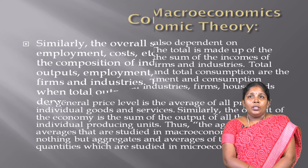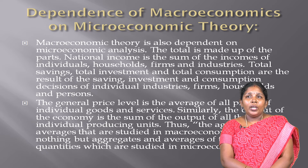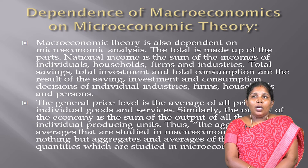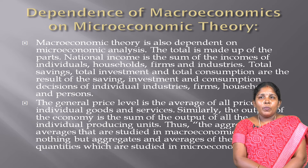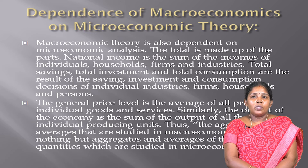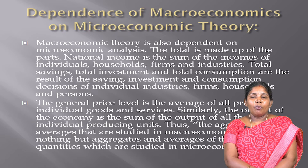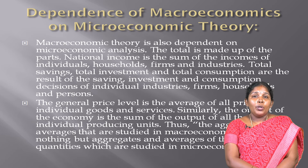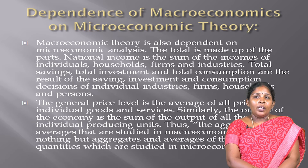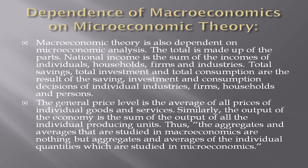Dependence of macroeconomic theory on microeconomic theory. Macroeconomic theory also depends on microeconomic analysis. The total is made up of the parts. National income is the sum of income of individual households, firms, and industries. Total savings, total investment, and total consumption are the result of the saving, investment, and consumption decisions of individual industries, firms, households, and persons. The general price level is the average of all prices of individual goods and services. Thus the aggregates studied in macroeconomics are nothing but aggregates and averages of the individual quantities studied in microeconomics.